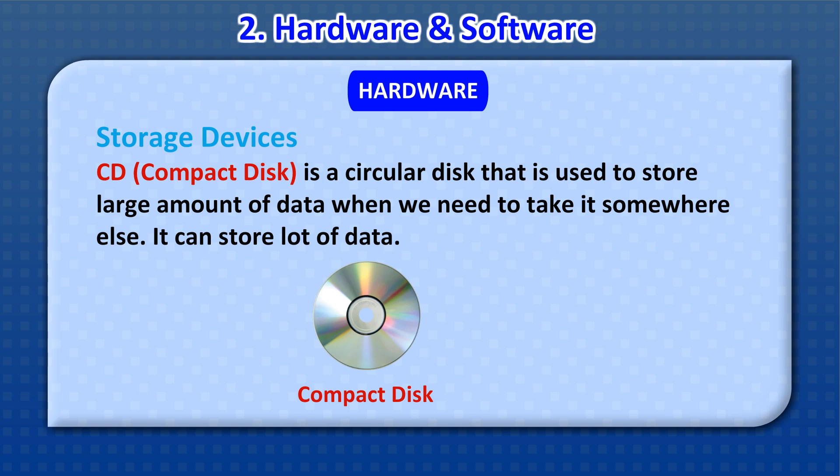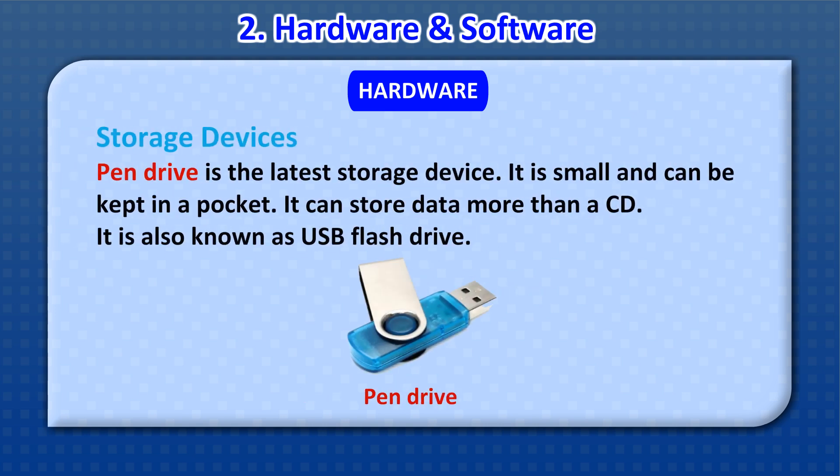Compact Disk (CD) is a circular disk that is used to store a large amount of data when we need to take it somewhere else. It can store a lot of data. Pen drive is the latest storage device. It is small and can be kept in a pocket. It can also store data more than a CD.